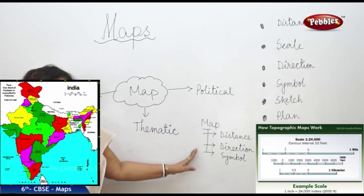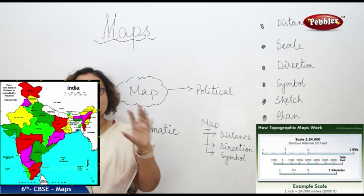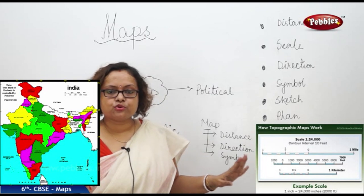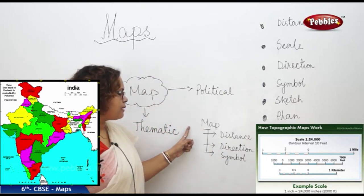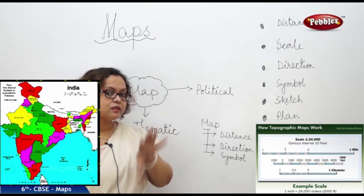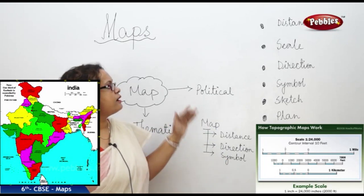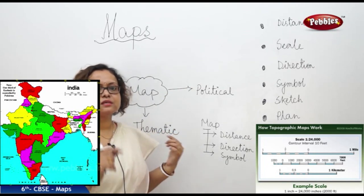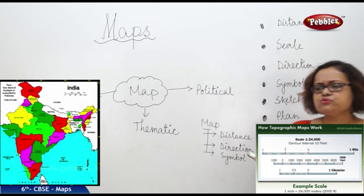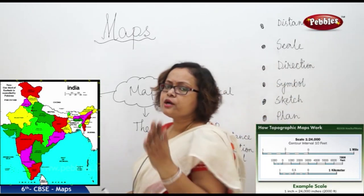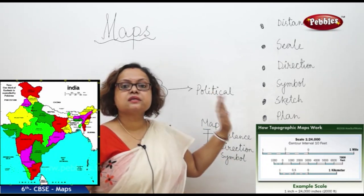Next, what are the major components of a map? A map is a miniature — we cannot draw the Earth exactly as it is, there is no paper big enough for that. So we are squeezing and condensing it onto a piece of paper. The major components needed to draw a map are: distance, direction, and symbols. First, let's talk about distance. What is the distance from the southern part of India to the northern part? If I need to travel from Kanyakumari to Kashmir using a map, how does the map tell me the distance I need to cover?